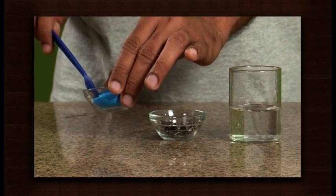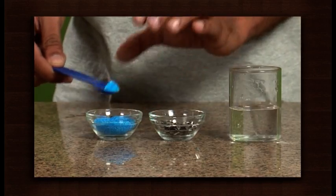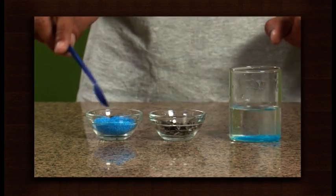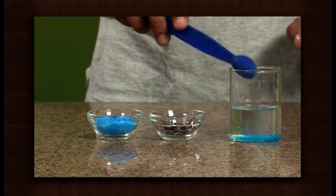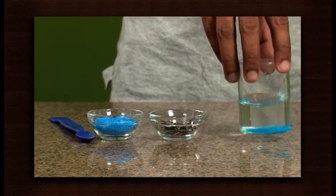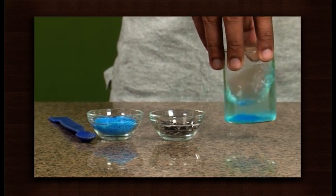Dissolve two spoons of copper sulphate in some water. Swirl it to obtain a clear blue solution.